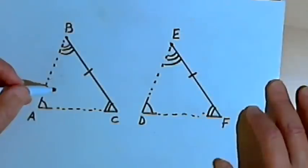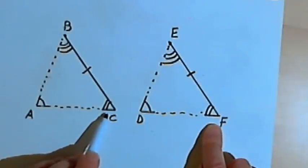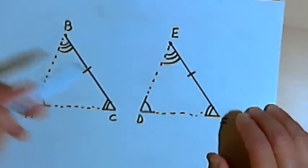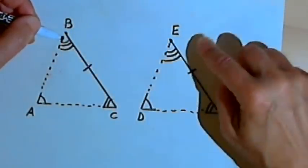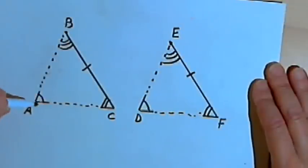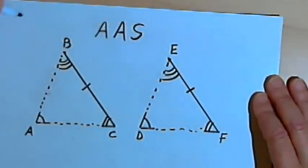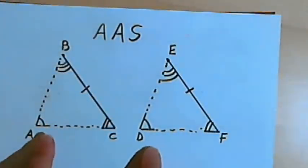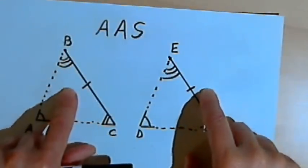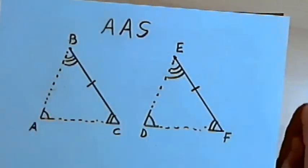Now I've created a situation where I've got angle-side-angle: angle C and angle F, then side CB and FE, and then angle B and angle E. So these two triangles must be congruent because of angle-side-angle congruence. But I started out just knowing angle-angle-side, so that means angle-angle-side is itself a valid congruence. If you have two triangles with a pair of congruent angles, another pair of congruent angles, and a pair of congruent sides that aren't even between those two angles — angle-angle-side — the triangles are going to be congruent.